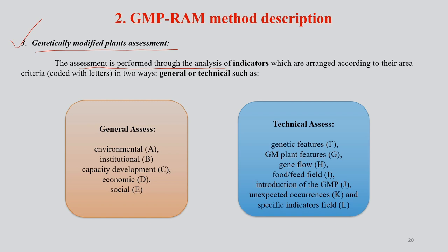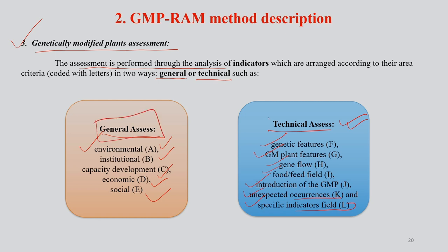The assessment is performed through analysis of indicators which are arranged according to their area, coded in two ways: general and technical. The general assessment is done on environmental, institutional, capacity development, economy, and social aspects. The technical assessment is done by studying genetic features, GM plant features, gene flow, food and feed field, introduction of GMP, unexpected occurrences, and specific indicators. So two kinds of assessments are carried out in genetically modified plants assessment: general and technical.